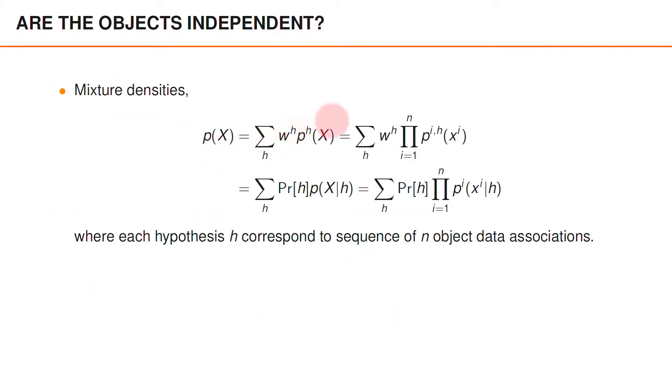We have seen that we have mixtures that correspond to sequences of n-object data associations. Now if we condition on a specific data association hypothesis, then we see that the object states are actually independent,